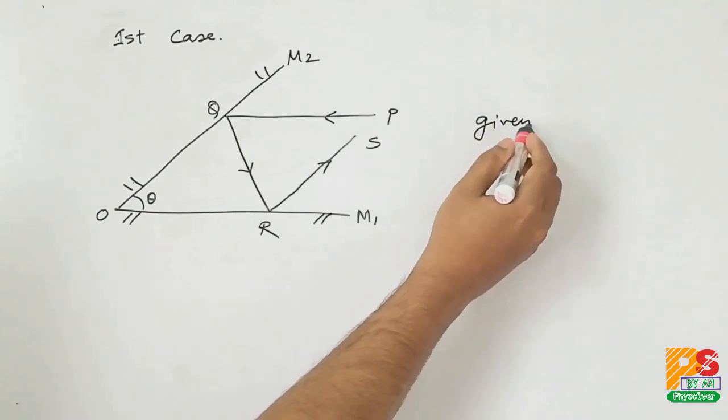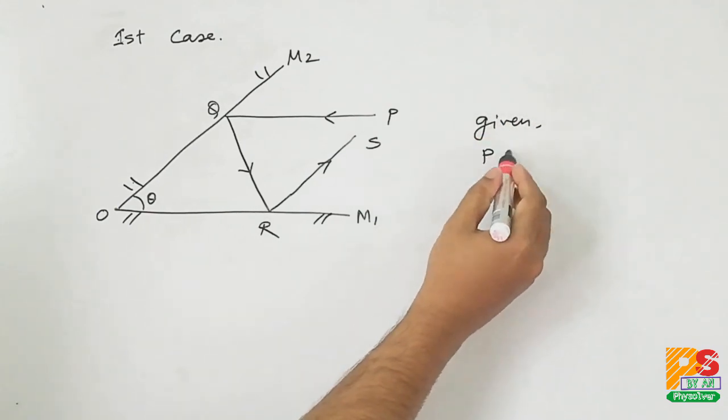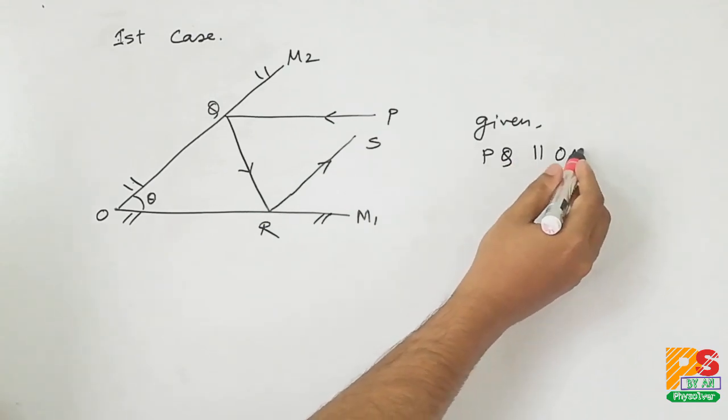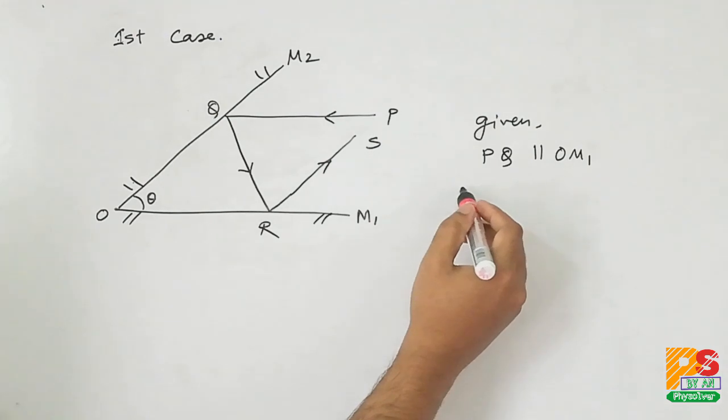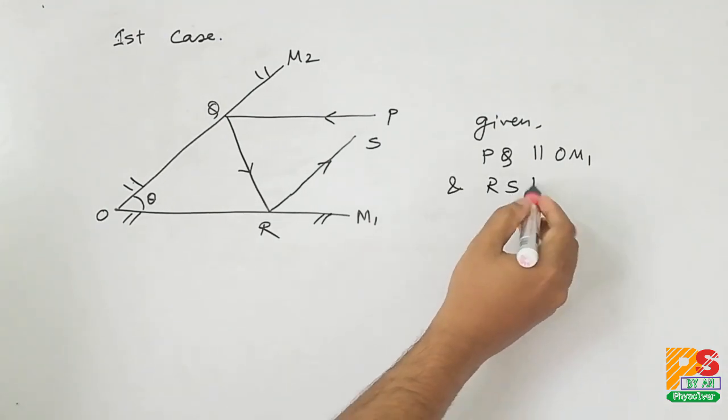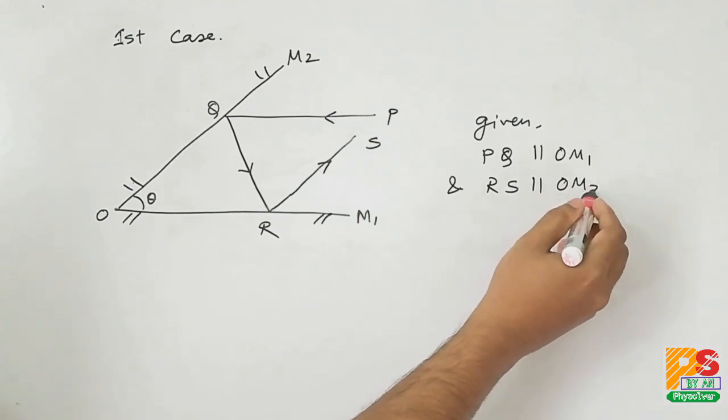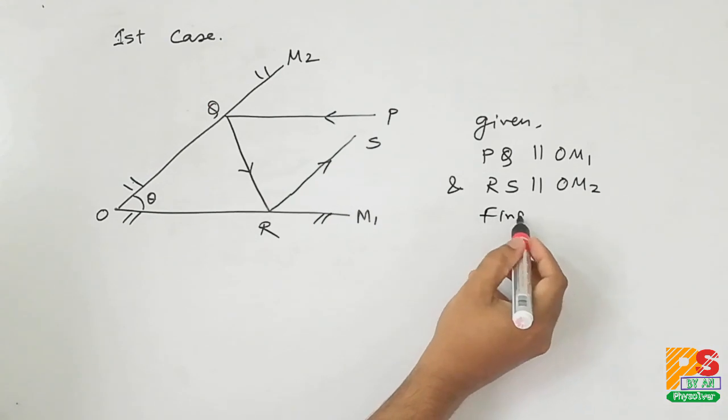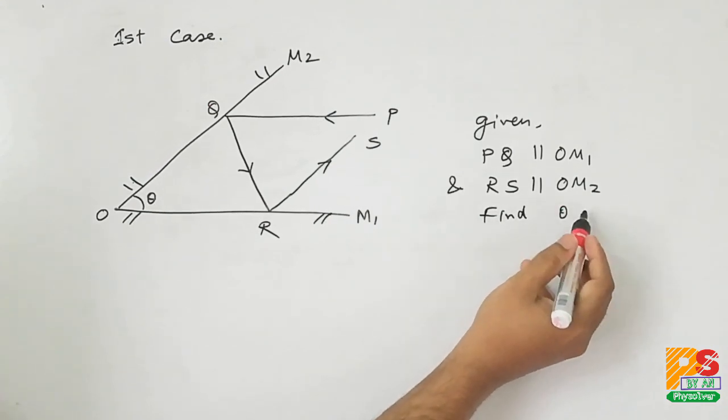So by the problem it is given incident ray PQ is parallel to OM1, and emergent ray RS is parallel to OM2. We have to find theta.